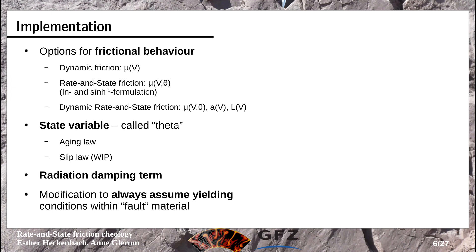Rate and state friction assumes that the material where it occurs is always yielding. Normally we compare current stress to yield stress, and if current stress is greater we yield — but I now have a hack that says if we are in the fault material, the material is at yielding always, so it's a bit hard-coded.